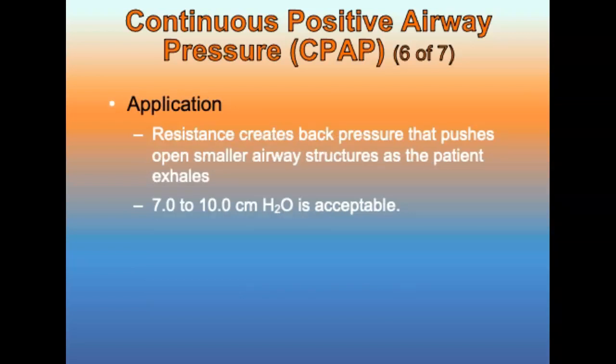Components of the CPAP unit include a generator, a mask, and a circuit containing coordinated tubing, bacteria filter, and a one-way valve. The CPAP generator creates resistance throughout the respiratory cycle; the resistance creates back pressure into the airway that pushes open smaller airway structures. The amount of pressure is determined by a valve within the system. A pressure of 7.0 or 10.0 centimeters H2O is generally an accepted therapeutic range. Most CPAP units are powered by oxygen, and disposable CPAP devices are lightweight and relatively easy to operate.